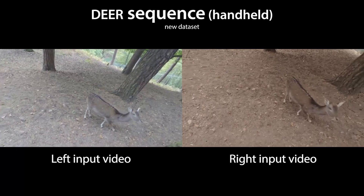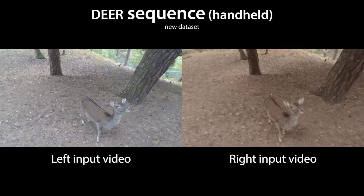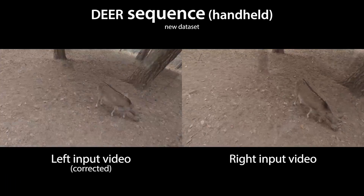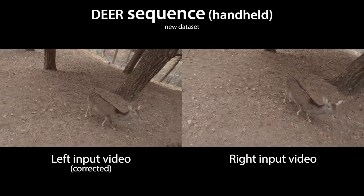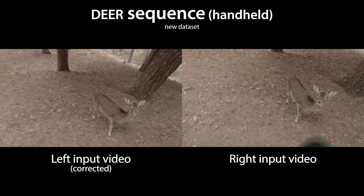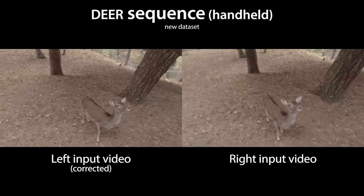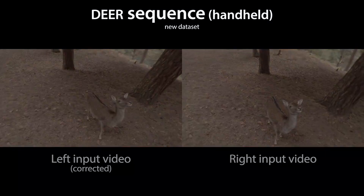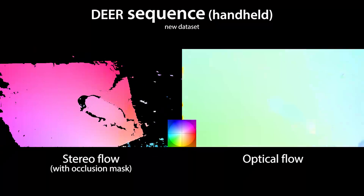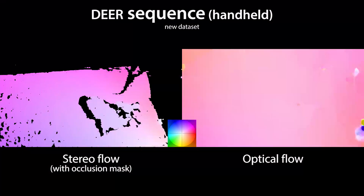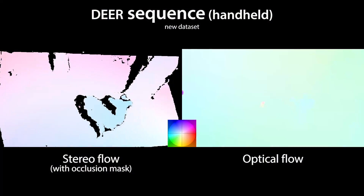In our approach, we therefore estimate a global affine color transform from corresponding pixels, which corrects the inconsistent appearance. This color correction results in improved flow estimates and a better scene flow result from the challenging input videos.